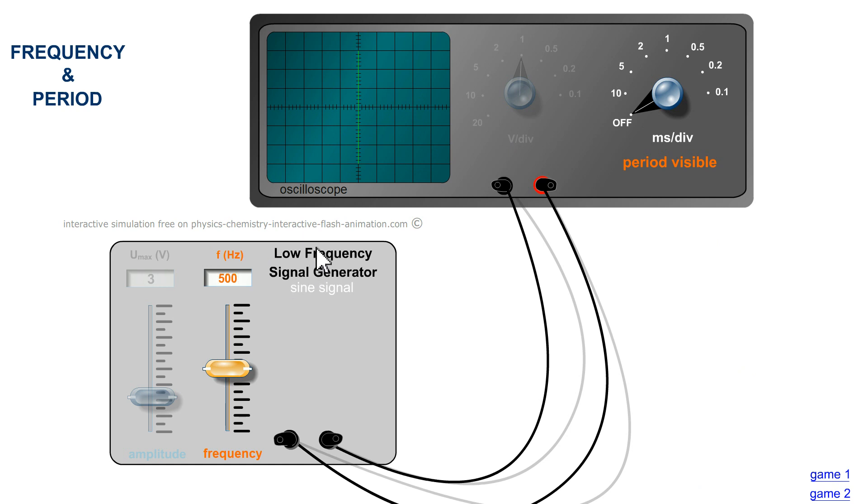You see a frequency displayed here, given by the generator. We will see if there is consistency between this frequency and the period displayed. The period is a duration. Its measurement will be done horizontally.